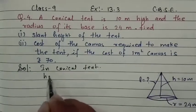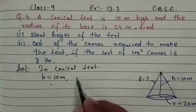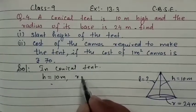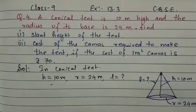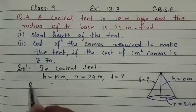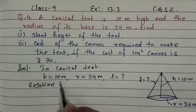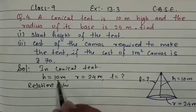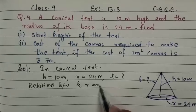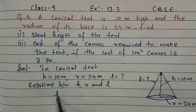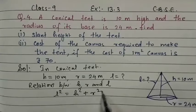So, h kitna hai — 10 meter. r, radius is 24 meter. And l is missing. The relation between h, r, and l is: l² = h² + r².